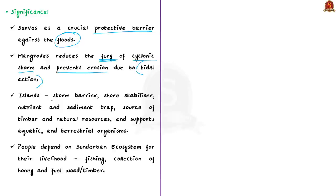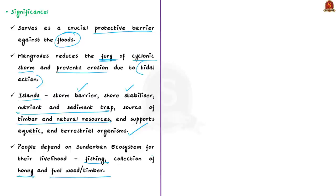The islands of Sundarbans are of great economic importance. They act as a storm barrier and shore stabilizers, provide nutrient and sediment traps, and are a source of timber and natural resources. They also support a wide variety of aquatic and terrestrial organisms. These islands are an excellent example of the ecological processes of monsoon rain flooding, delta formation, tidal influence and plant colonization. Millions of people depend on the Sundarbans ecosystem for their livelihood through fishing, collection of honey, and collection of fuel wood or timber.